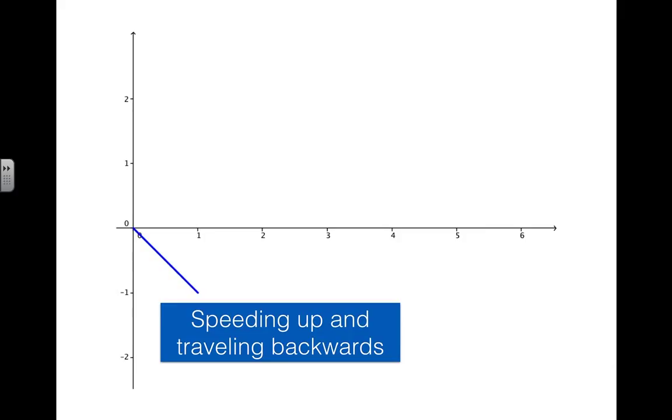So what we see is that the velocity here is going downward from zero to one. And so if we go on the time t from zero to one, then we see that the velocity goes from zero to minus one. So this object is speeding up but it's traveling backwards because its velocity is negative.